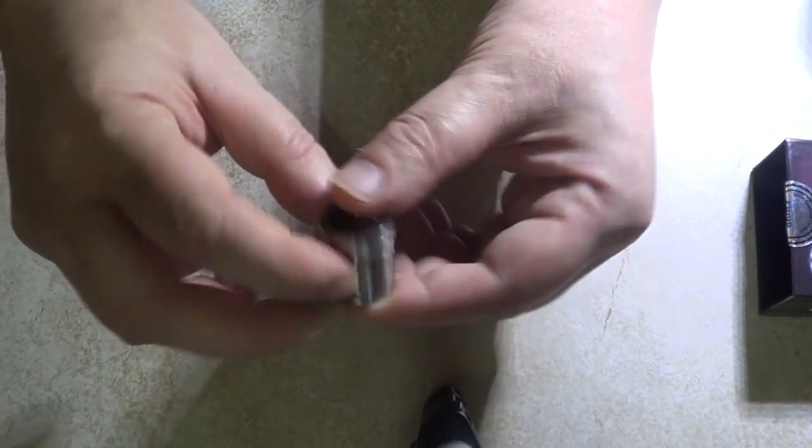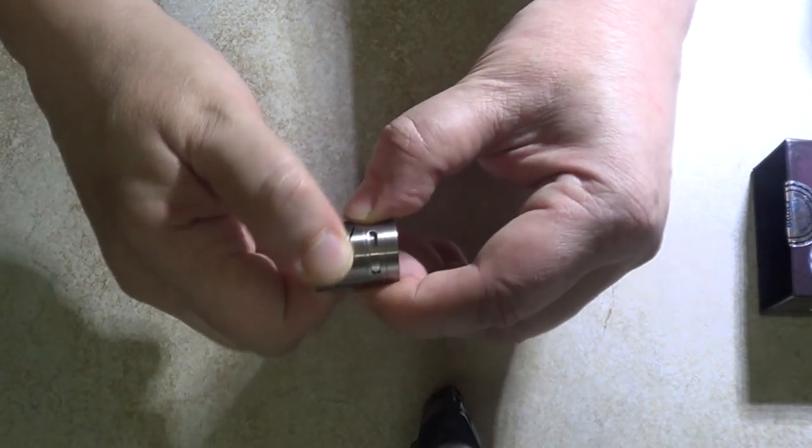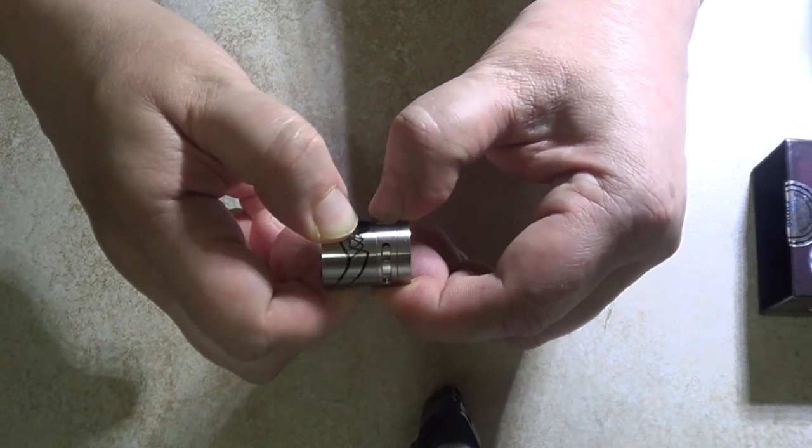The atomizer has airflow on both sides, which can be adjusted with an air adjustment ring to reduce or increase the airflow.